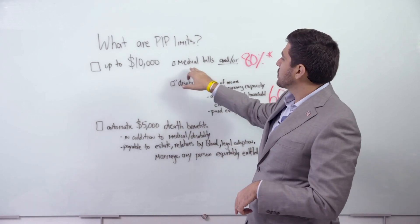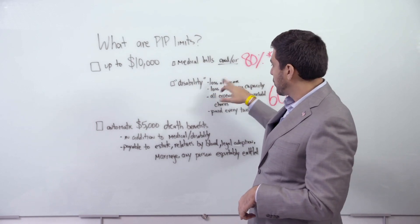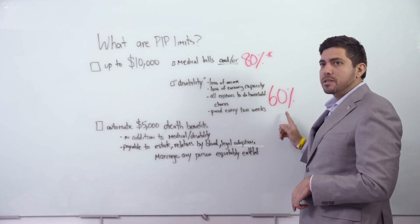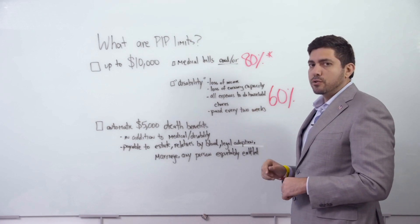So 80% of medical bills and/or disability benefits. Disability, we call it lost wages pretty much, but it's more defined there. And that's 60%—60% of loss of income, loss of earning capacity, and expenses to do household chores.